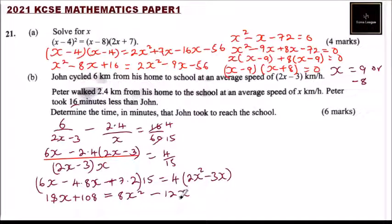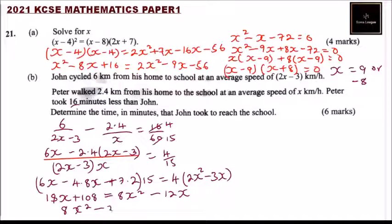Bringing everything to one side: 8x squared minus 12x minus 18x minus 108 equals 0, which simplifies to 8x squared minus 30x minus 108 equals 0.